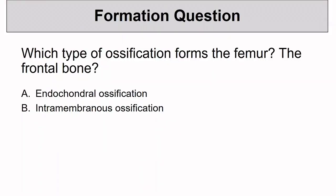Our first question: which type of ossification forms the femur? How about the frontal bone? The femur is a long bone and forms through endochondral ossification. The frontal bone, as well as other flat bones of the skull, forms through intramembranous ossification. So most bones of the body form through endochondral ossification; intramembranous ossification forms the bones of the face, the flat bones of the skull, and the lateral portion of the clavicle.